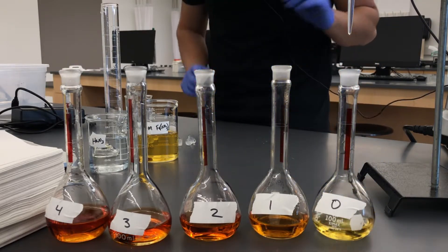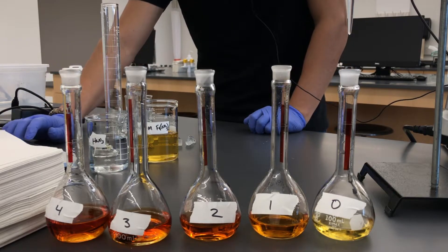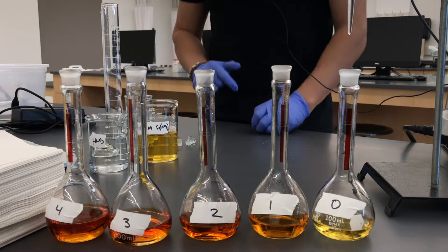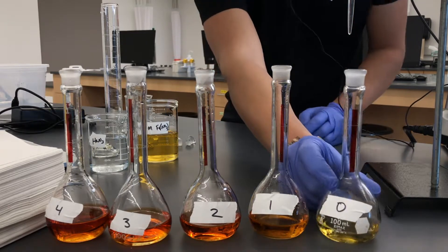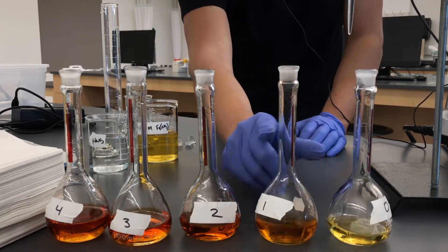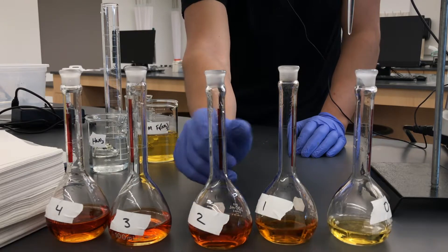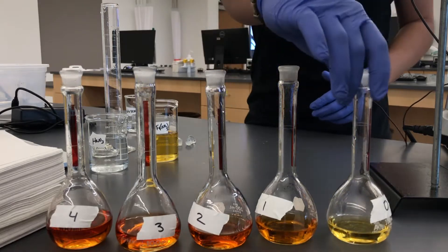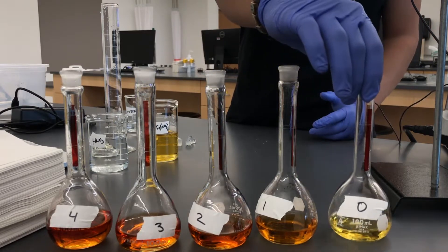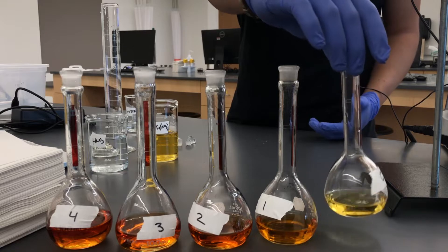You can see they all have a little bit different color. This is 0, that's our blank. Now we're going to fill them all the way up to the marks with nitric acid and then we'll mix them properly. So to the marks are wherever the line is up here at the top. Each volumetric flask has a different mark of 100 mils.